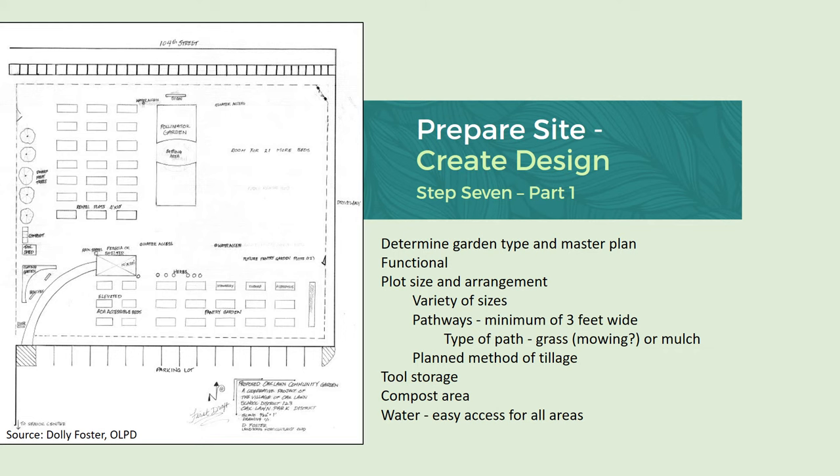Once they had more funding, they were able to put in a tool shed, a compost area, and more dwarf fruit trees. They partnered with the park district, village, and school district to obtain the land and put in underground water. This was a collaborative effort that really proved to be successful.